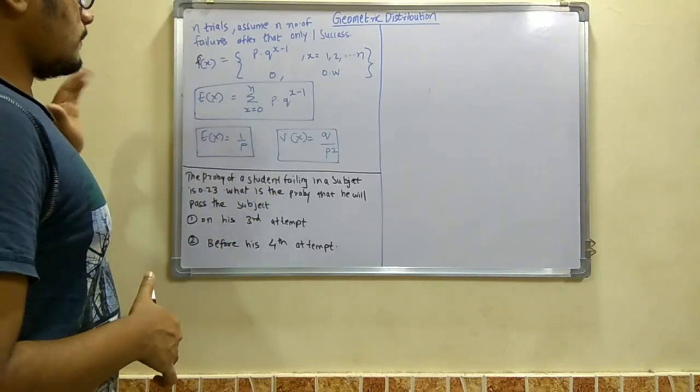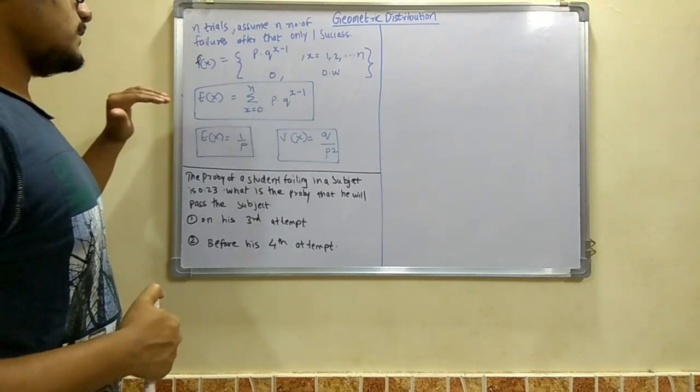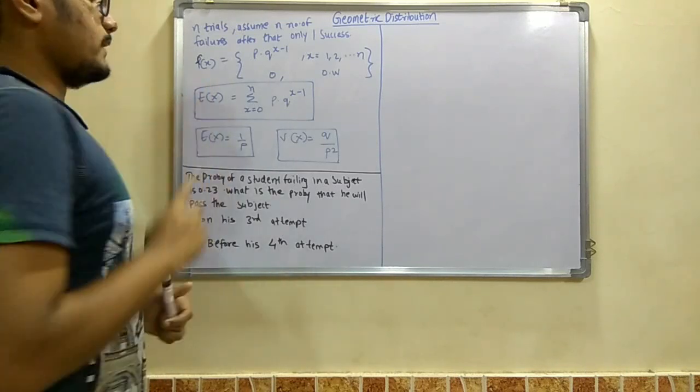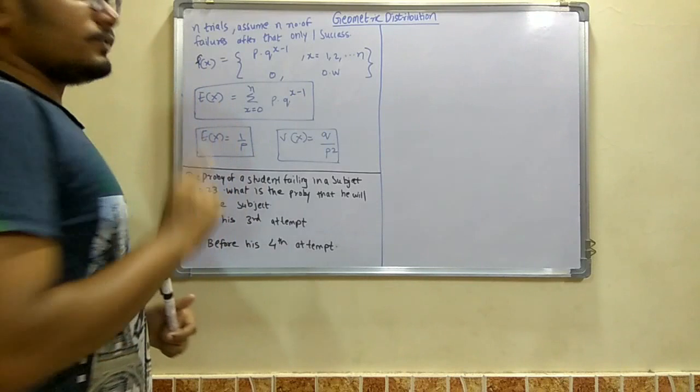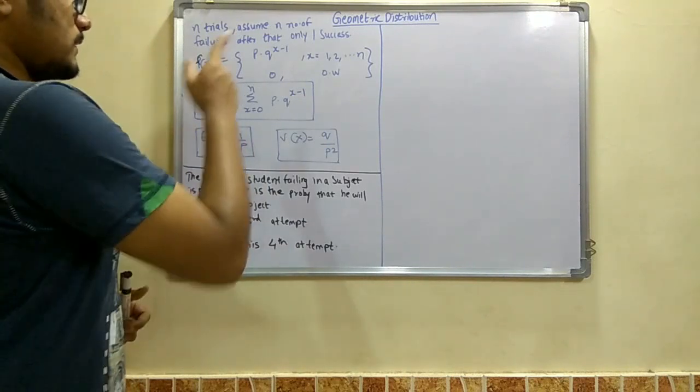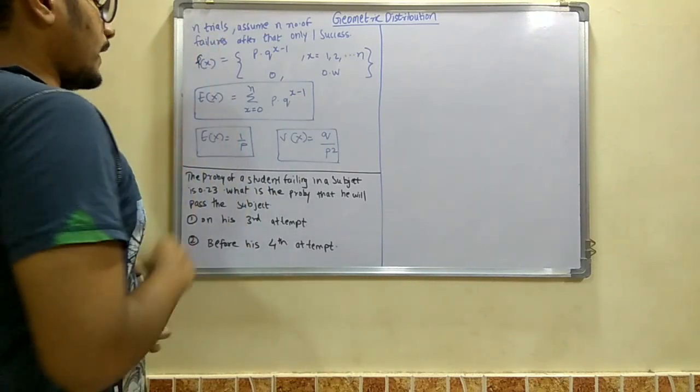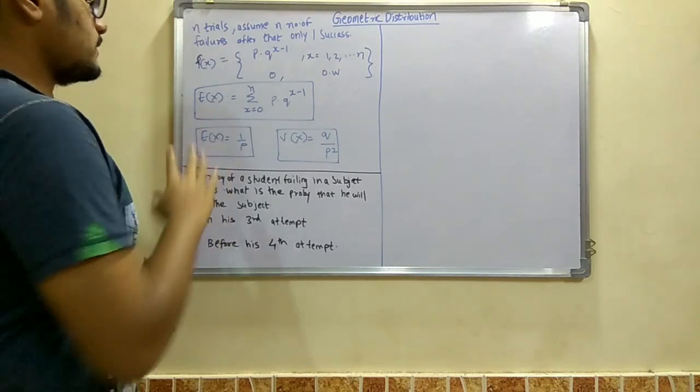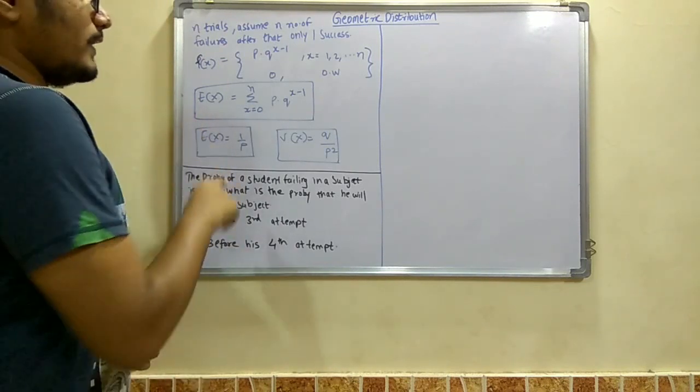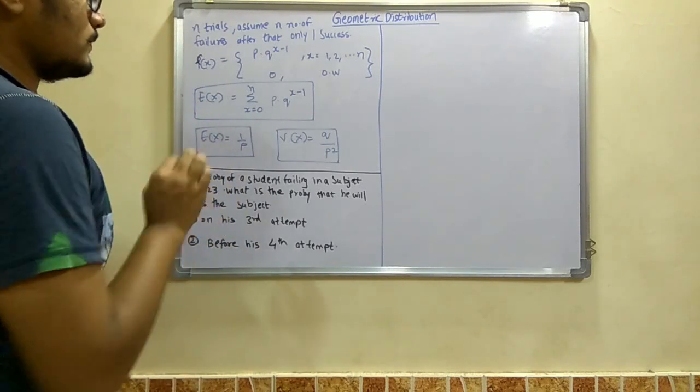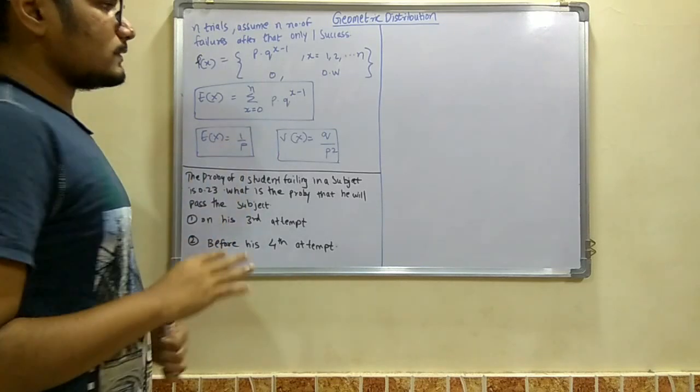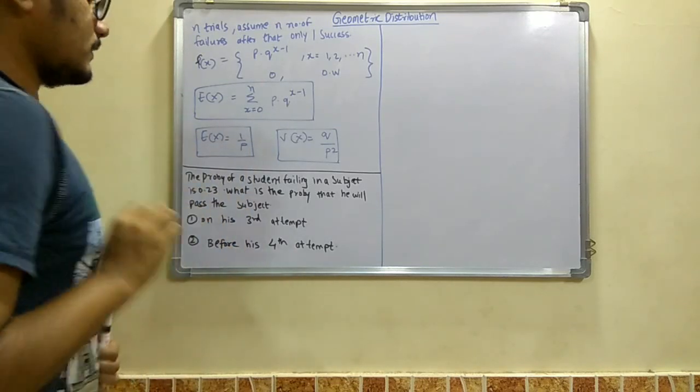Then you have the mean for this, that is the function which is summation x equals 0 to n, p into q raised to x minus 1. And finally we have the mean and variance. Mean is defined as 1 by p, and variance is q upon p square. So that was all about the parameters which we would be requiring for solving the problem.